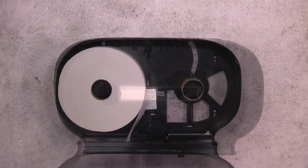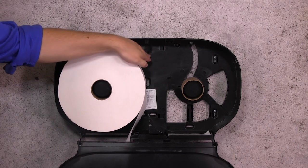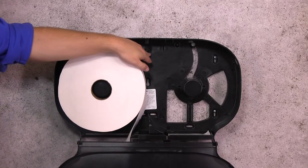To replenish the rolls, simply open the cover, push down the lever and remove empty cores.